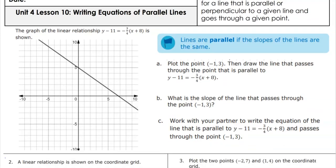We have a graph showing y minus 11 equals negative three-fourths times x plus 8. What form is that? It is point-slope. What point did they give me? Pull it out and change its sign — that's negative 8 and positive 11. So they've given me the point negative 8, 11. And then what is the slope? Negative 3 over 4. From there, they went down 3 and over 4 to draw the line.